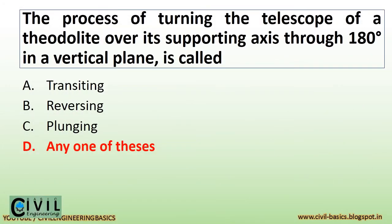The process of turning the telescope of a theodolite over its supporting axis through 180 degrees in a vertical plane is called transiting — also known as reversing or plunging.